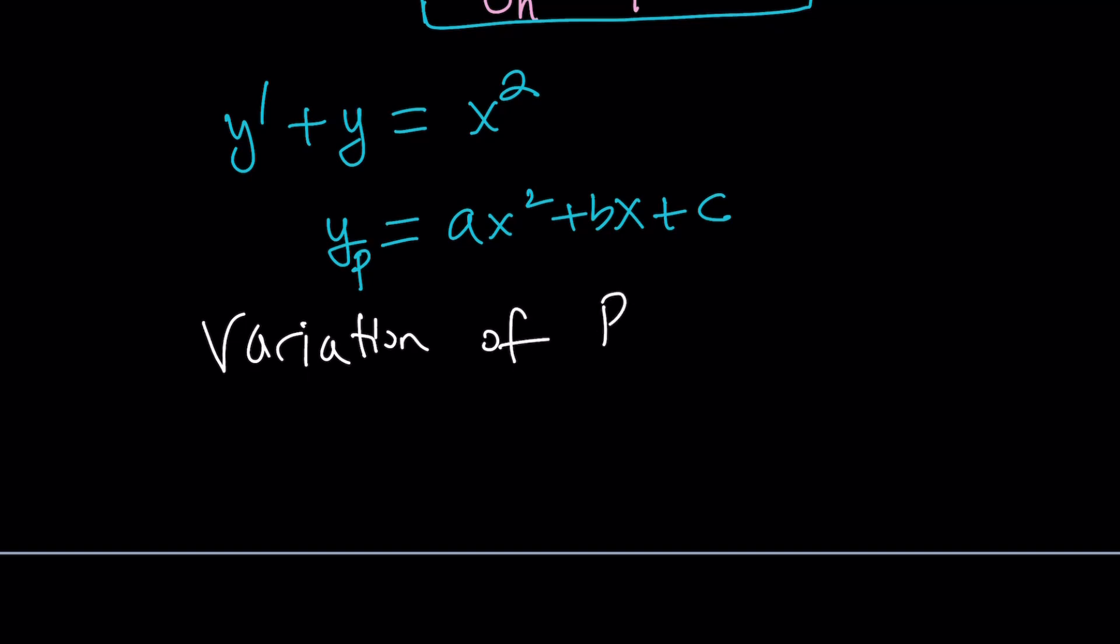Variation of parameters is a really cool method to be used with non-homogeneous equations, especially for these kinds of equations. Sometimes the solution comes as an integral, and if you can't integrate that easily, the solution will be in the form of an integral. But in this case, don't worry, things are going to simplify very nicely. Let's get to work.